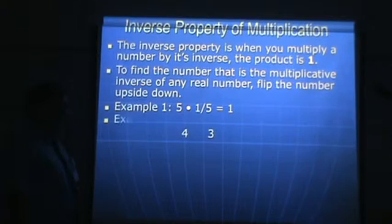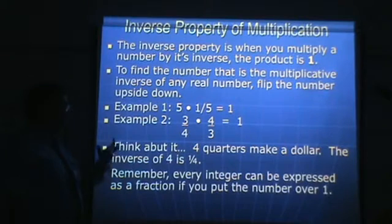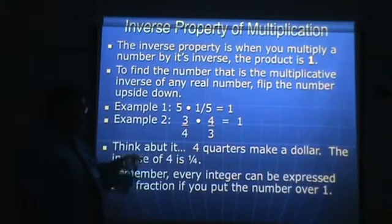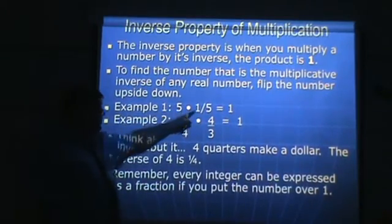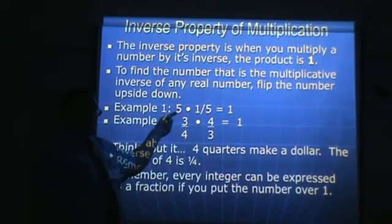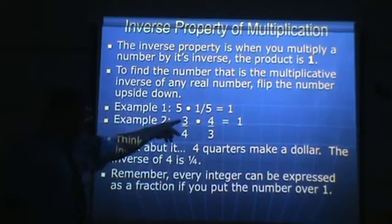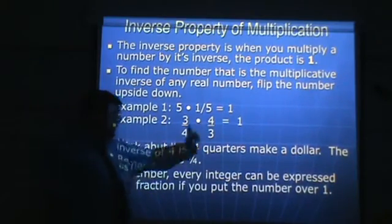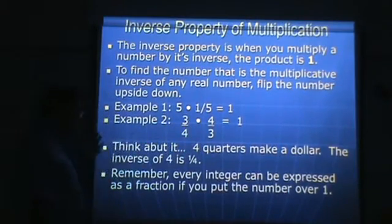Inverse property of multiplication: just as the inverse property of addition results in zero when you add, the inverse property of multiplication results in one when you multiply. To find what number you need, you use the reciprocal. The reciprocal of five is one-fifth — five times one-fifth equals one. Three-fourths times four-thirds: three times four is twelve, four times three is twelve, twelve over twelve is one. Whenever you take a fraction and flip it upside down, you get its reciprocal, and multiplying a number by its reciprocal always gives one.